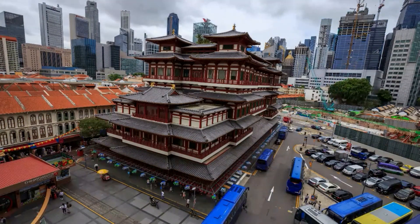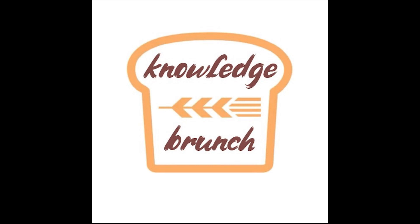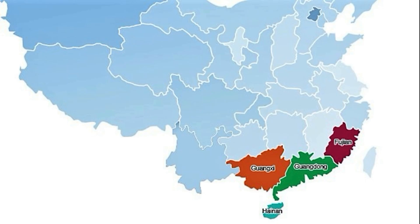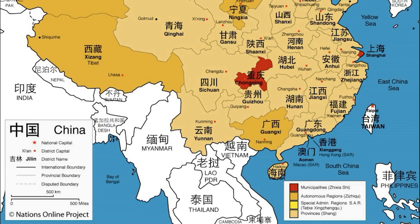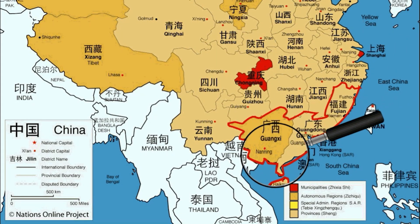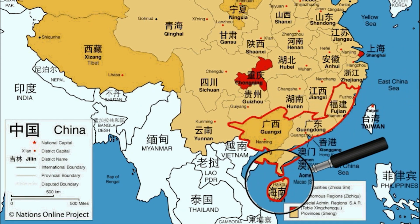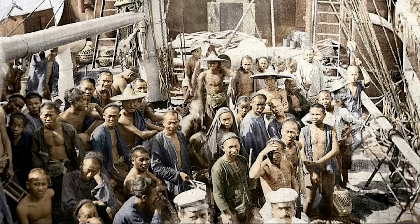This video aims to discuss how all of this was made possible. China's southern coastline includes provinces like Fujian, Guangdong, Guangxi Zhuang Autonomous Region, and Hainan. Most of the 60 million overseas Chinese hail from these four provinces — half of them come from Guangdong and 35% from Fujian.